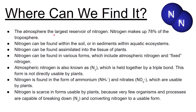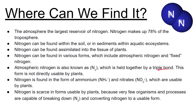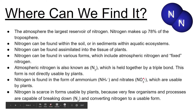Where can we find nitrogen? The atmosphere is the largest reservoir — nitrogen makes up 78% of the troposphere. Nitrogen can also be found within the soil or in sediments of aquatic ecosystems, and assimilated into the tissue of plants and animals. Nitrogen exists in two main forms: atmospheric nitrogen (N2), held together by an extremely strong triple bond and not directly usable by plants, and fixed nitrogen. Very few organisms and processes are capable of breaking this triple bond, which is why usable nitrogen is so scarce to plants.